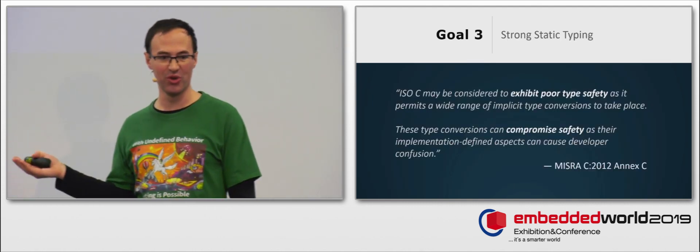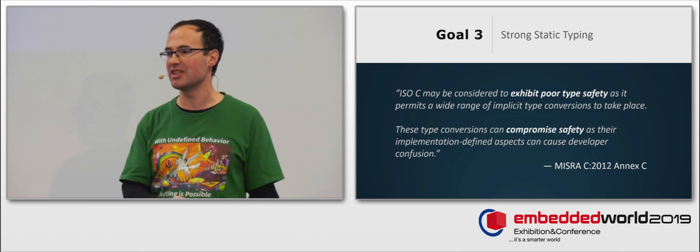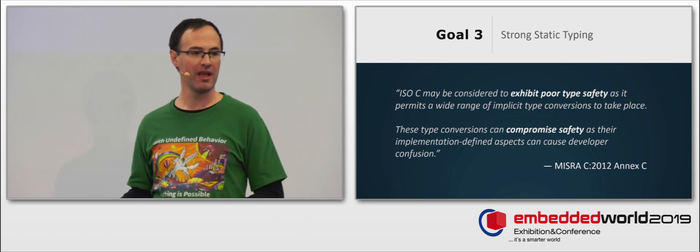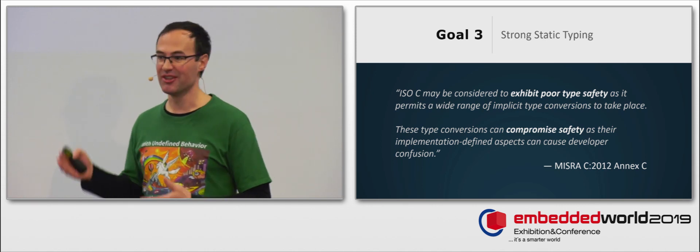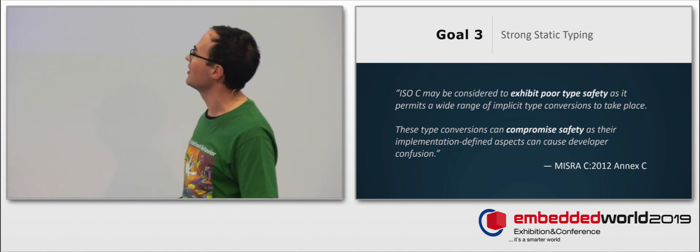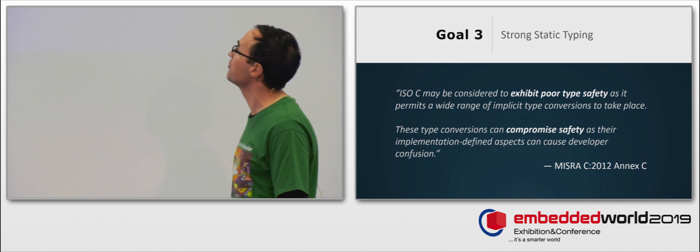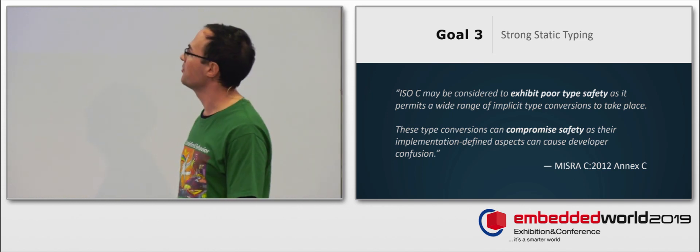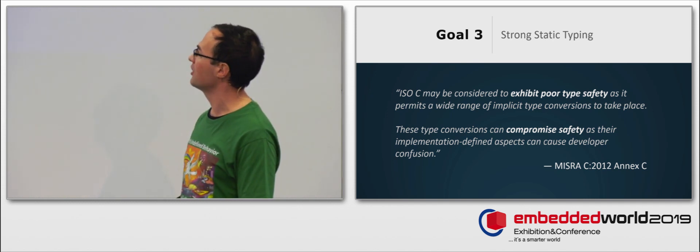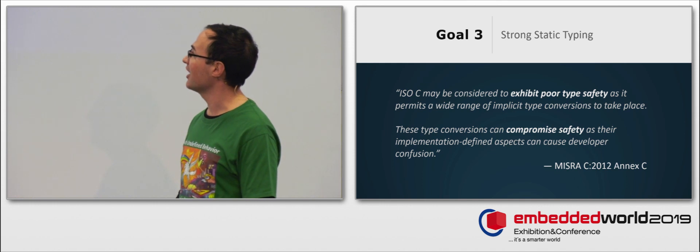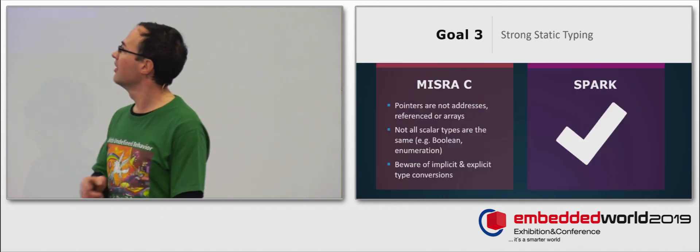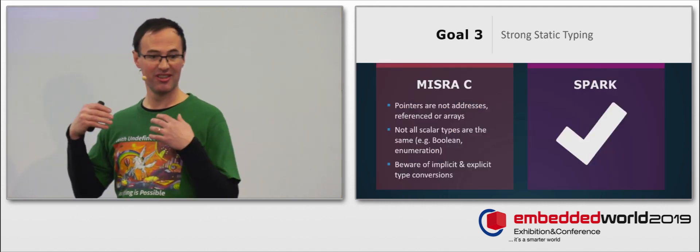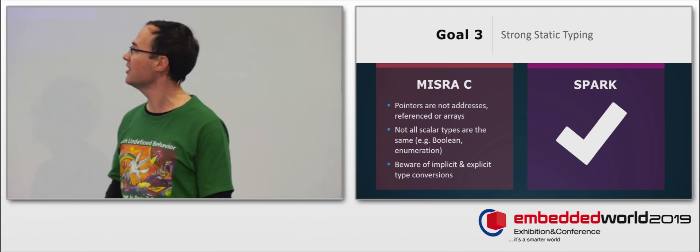Now, we get to a goal that sets C apart from many other programming languages. C is not type-safe. And that's bad. The MISRA C document says it. It says ISO C may be considered to exhibit poor type safety, as it permits a wide range of implicit type conversion to take place. These type conversions can compromise safety, as their implementation-defined aspects can cause developer confusion.